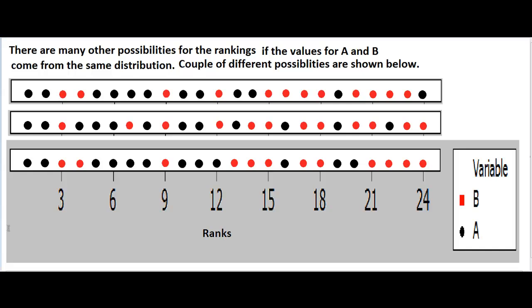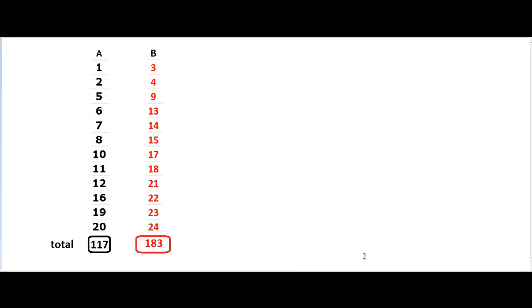There are many other possibilities for the rankings of the values of A and B from the same distribution. And here are a couple of different possibilities. So here we come back to our original situation. The rank sum for route A is 117 and that for route B is 183. And we want to compute the probability that we will see such a low or lower rank sum in case there is no difference between the two distributions. The rank sum here is 117 and here is 183 and that's what this sample showed us.